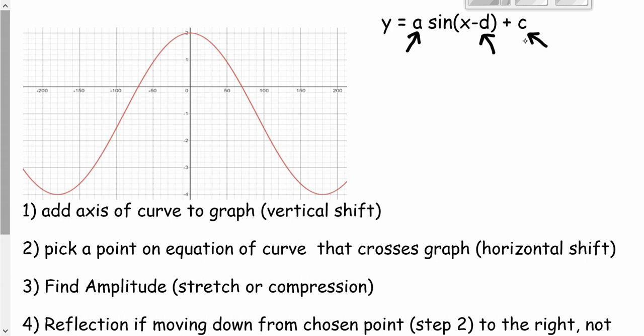How do we find this axis of curve? The axis of curve is found by looking at the minimum and the maximum point. We can see our minimum point is at negative four, and our maximum point is going to be at two. We need to find the point in between those two, so we add them together. Negative four plus two, and then we're going to divide by two. We want the average of those two values. Negative four plus two is negative two, divided by two is negative one. So our axis of curve should be at y equals negative one.